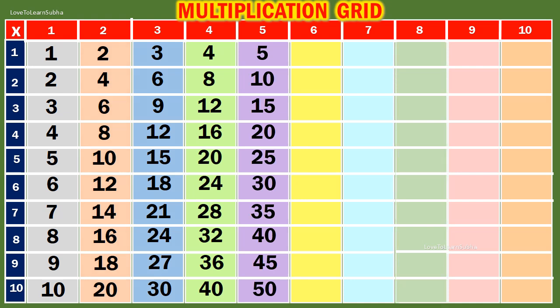Table of 6. 6 1s are 6. 6 2s are 12. 6 3s are 80. 6 4s are 24. 6 5s are 30.